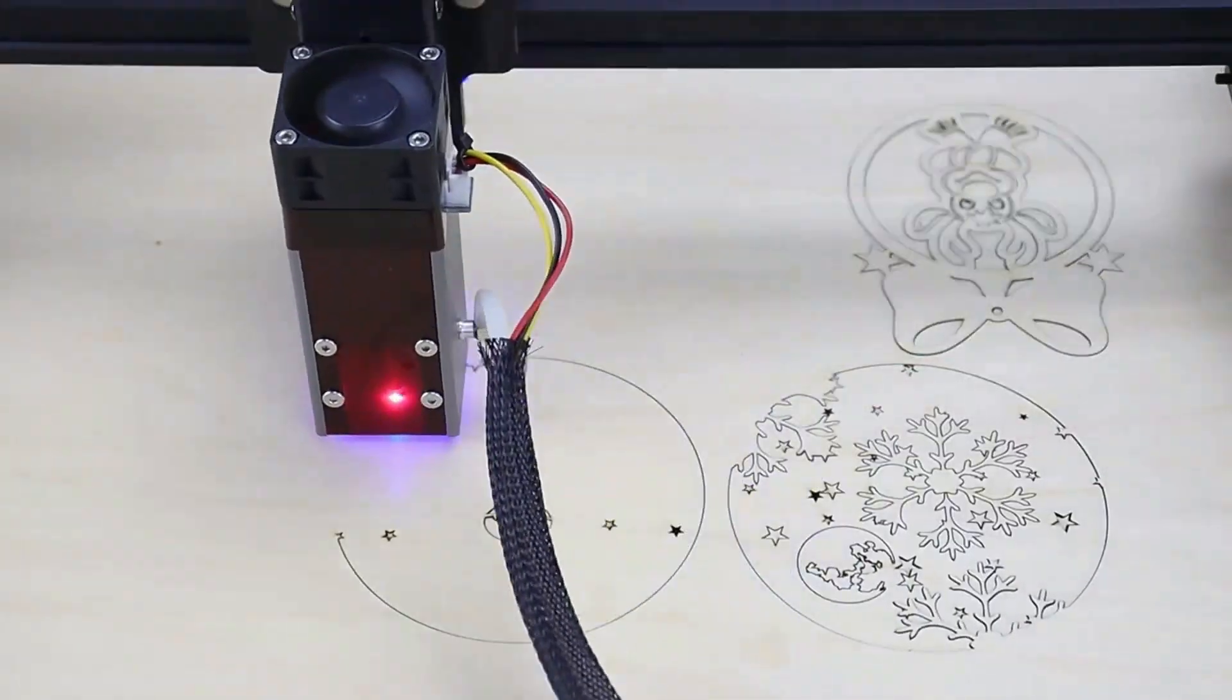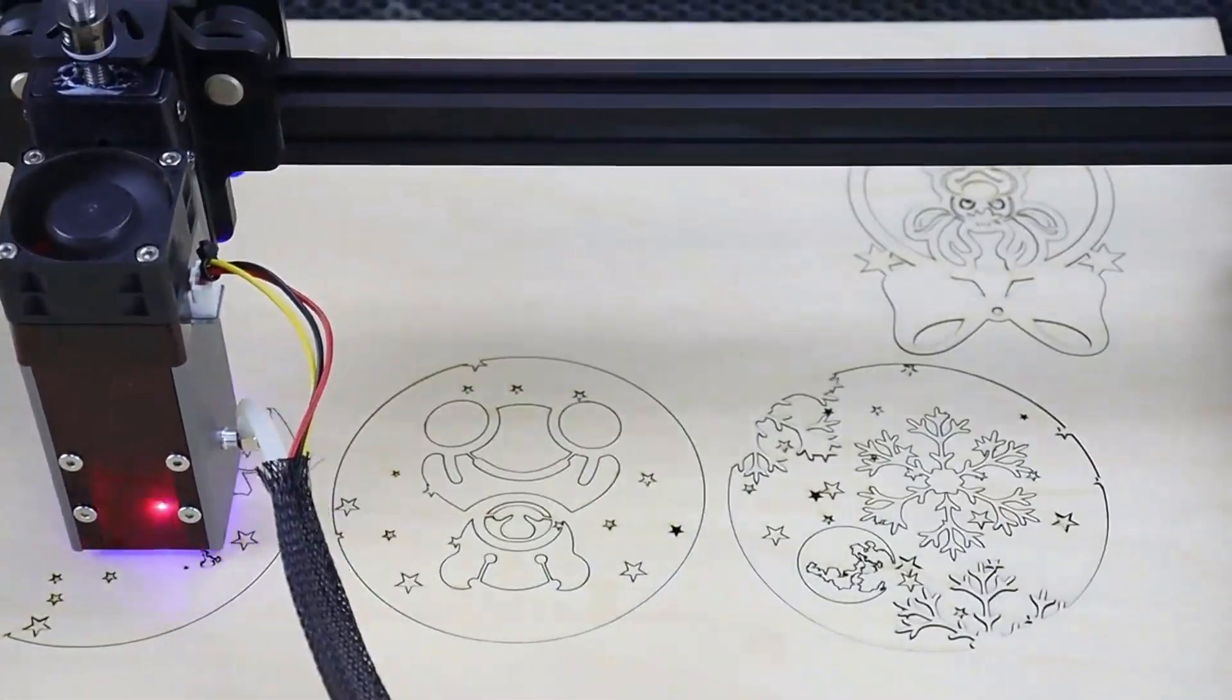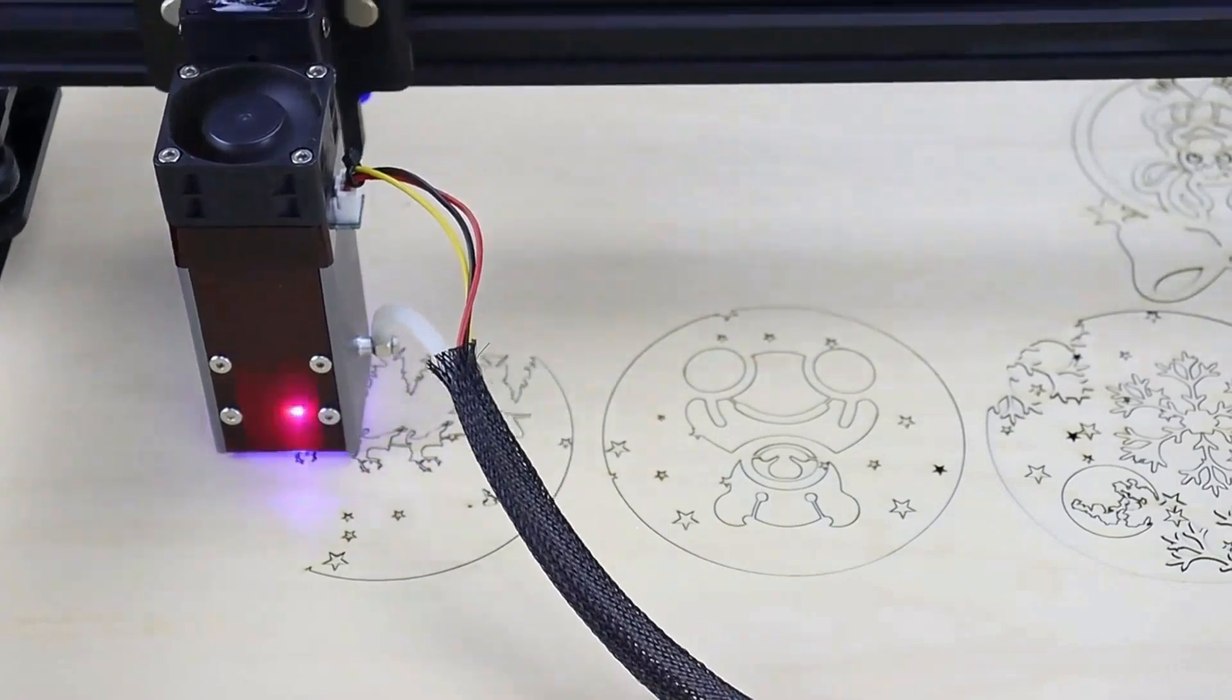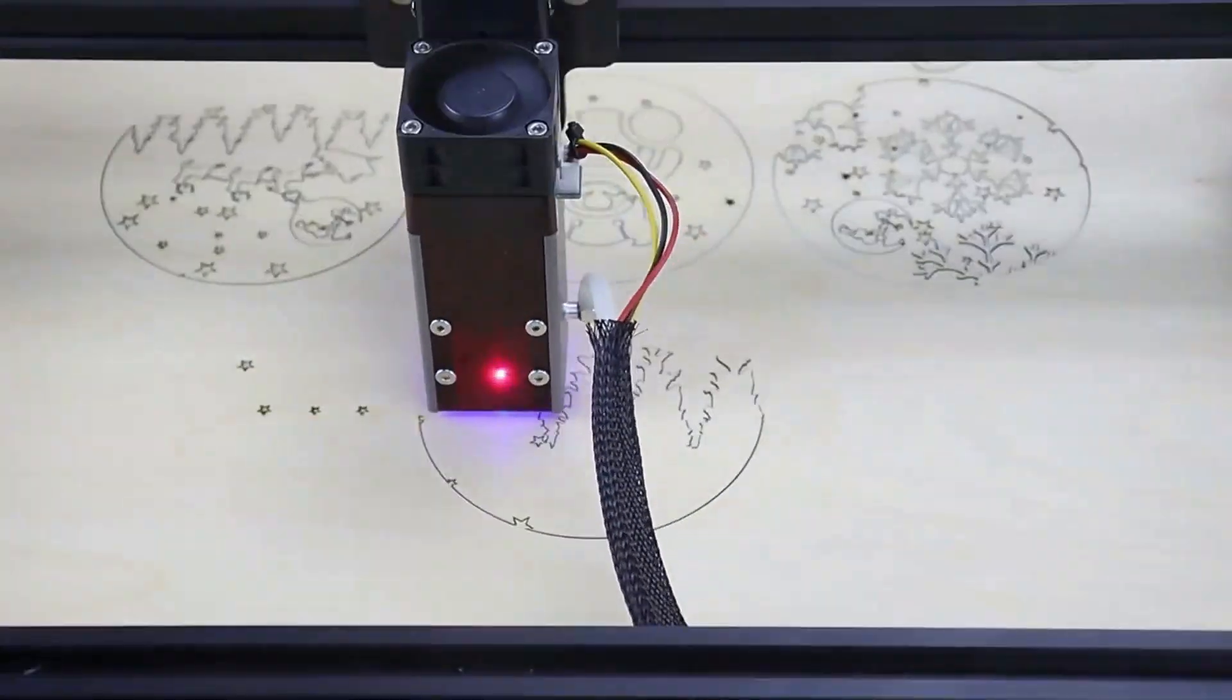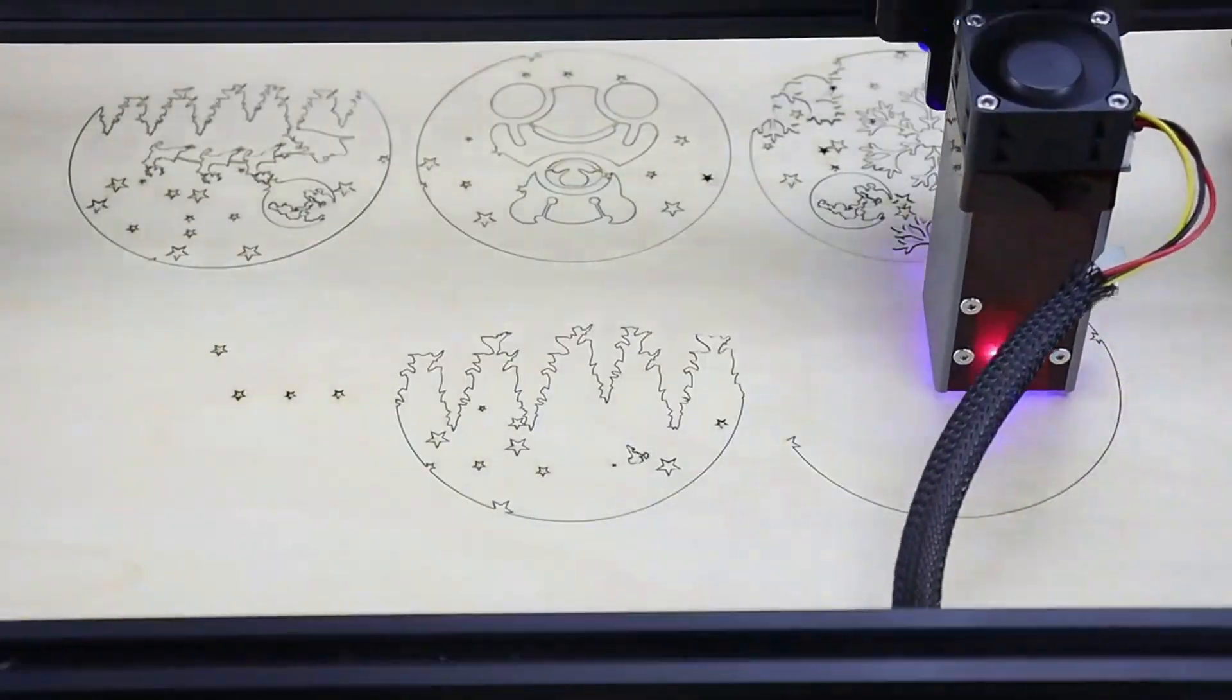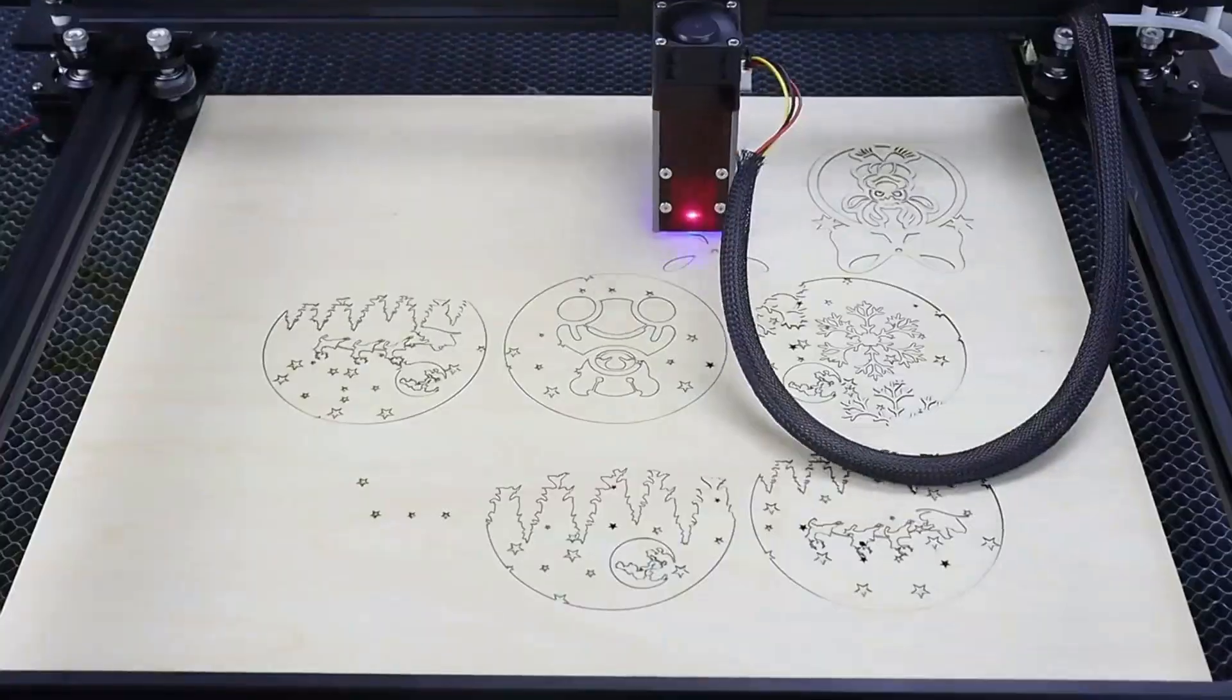Wireless laser engraver cutter wood cutting engraving machine router Zbaitu 81 x 46 cm, 80 watts air assisted laser module. Best downsized industrial high power laser engraver and cutter for business starters, hobbyists, designers, artists, homemakers, and professionals.